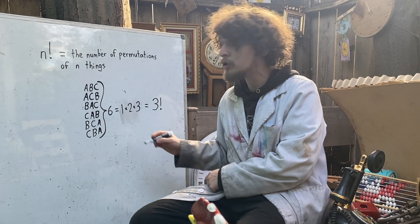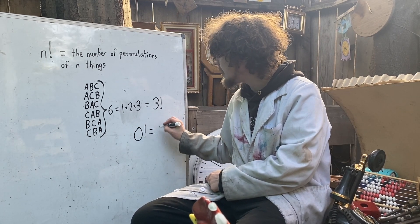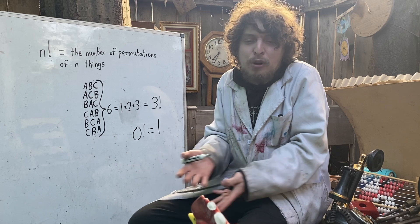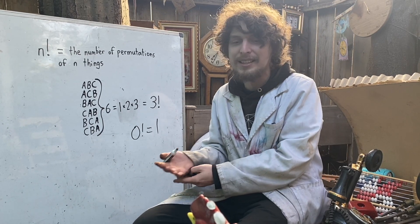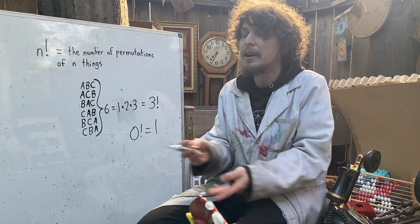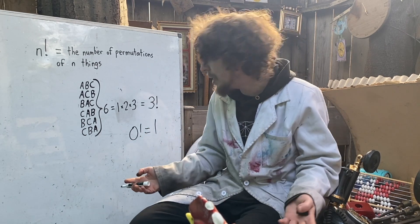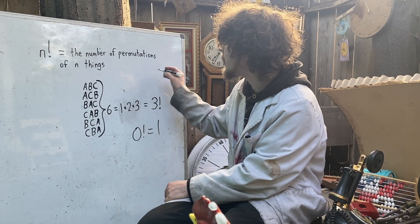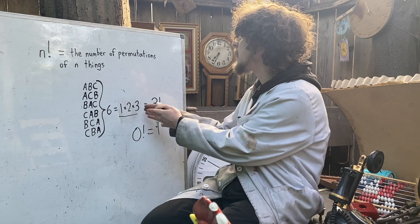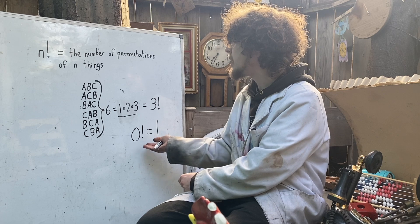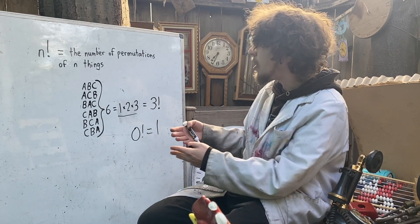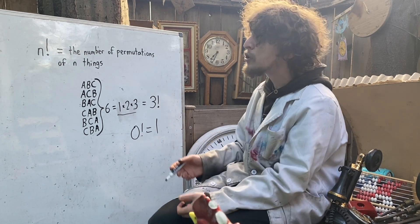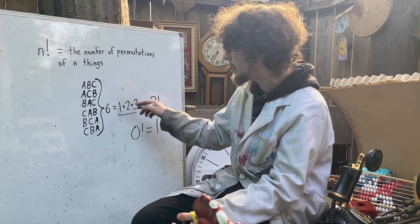This is one of the reasons why zero factorial was made to equal one. If you have zero things, there's one way of arranging them — nothing — for it to be. Another way to consider it: factorials are a multiplicative function, so the zeroth element, sometimes called the empty product, is taken to be one — the multiplicative identity that doesn't change elements under multiplication.